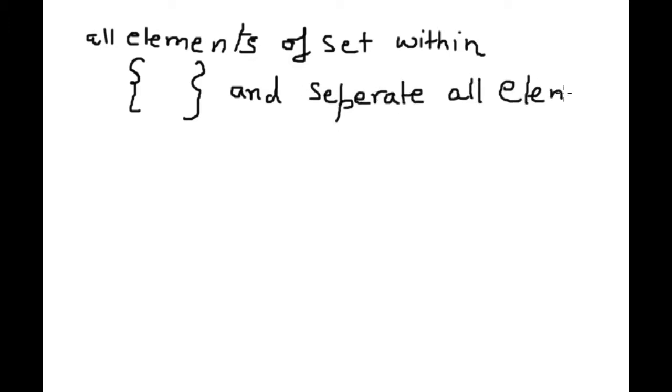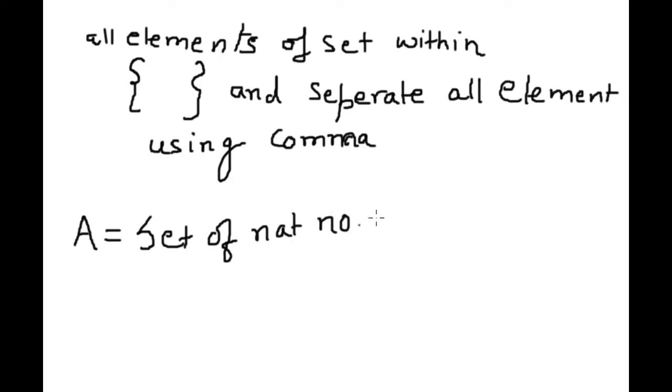We will write all elements of set within bracket and separate all elements by using commas. Let's suppose A is equal to set of all natural numbers, natural numbers less than 10.